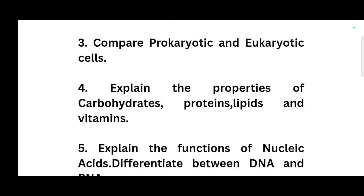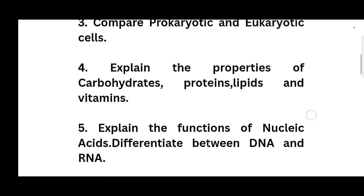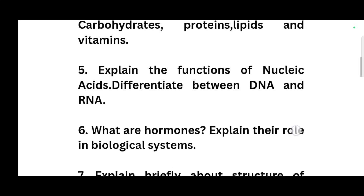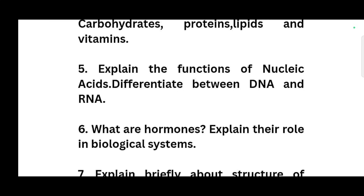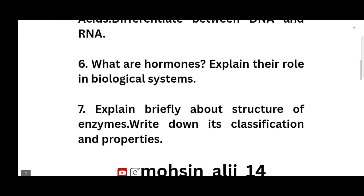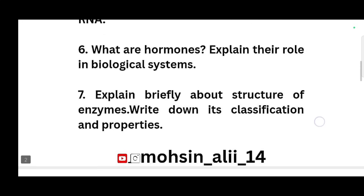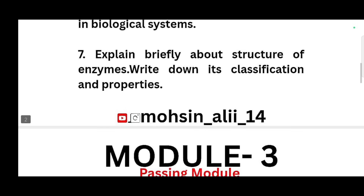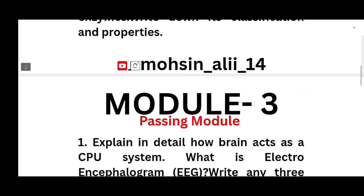Continuing Module 1: explain the properties of carbohydrates, proteins, lipids, and vitamins; explain the functions of nucleic acids and differentiate between DNA and RNA; what are hormones — explain their role in biological systems; explain briefly the structure of enzymes, write down its classification and properties. These are the seven super important questions from Module 1, with main focus on diagrams and application part.